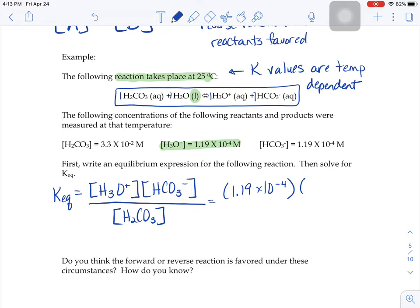Our HCO3 minus is also 1.19 times 10 to the negative fourth. And then we would divide that by the H2CO3 concentration, which they tell us is 3.3 times 10 to the negative second. If you go to plug that into your calculator, you should get 4.3 times 10 to the negative seventh.